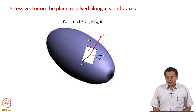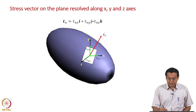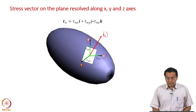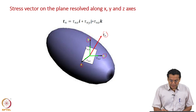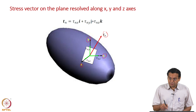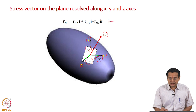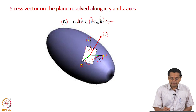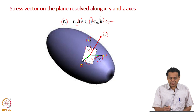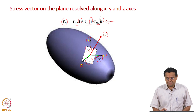Next, we took the same plane and the same stress vector, but now our coordinate axes are x, y, and z — the well-known coordinate axes. We resolved the same stress vector along the x, y, and z axes. The components are now tau_nx, tau_ny, and tau_nz. The stress vector is the same; only the second subscript has changed from n, s1, s2 to x, y, z.